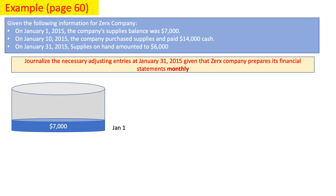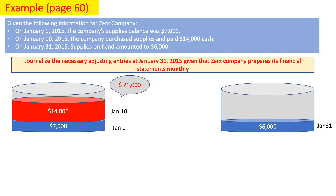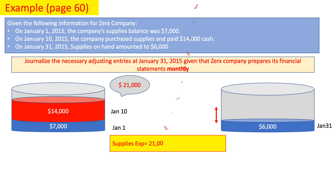Let's begin by conceptualizing our given. On January 1, supplies were $7,000. On January 10, we bought extra supplies for $14,000, so total supplies during January equals $21,000. On January 31, when adjusting entries were needed, I checked and found $6,000 worth of supplies on hand. The difference between what I had and what I still have is my supplies expense, so supplies expense equals $21,000 minus $6,000, which equals $15,000.